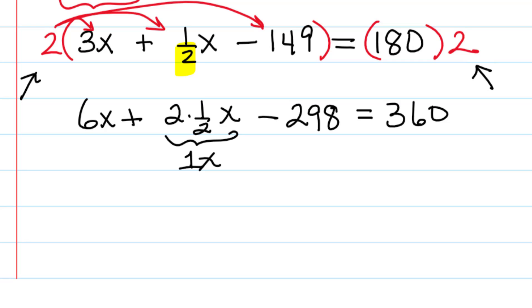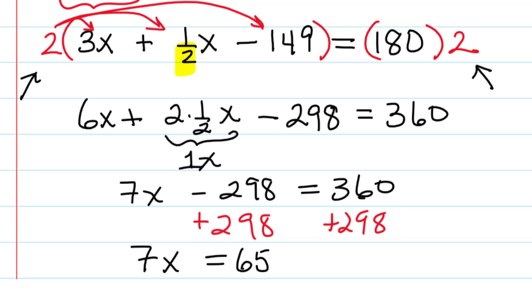So now I'm going to add 6x and 1x, and that's going to be 7x minus 298 equals 360. Now get x by itself. So I'm going to add 298 to both sides. So that's going to give me 7x equals, and we're going to have 658.